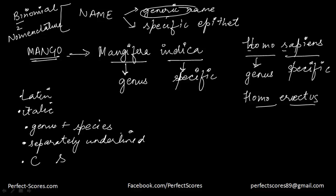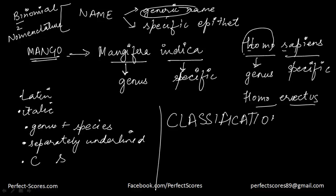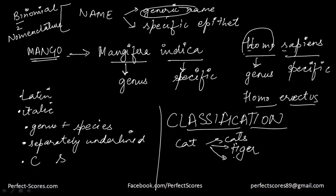Just like that, we cannot keep giving different names to different organisms. There is another process called classification. It is the process by which you can group any kind of species or organism into different convenient categories based on some observable characteristics. For instance, we have the cat family — simple domestic cats, tigers, and lions. We know they belong to the cat family because they all have certain common characteristics.